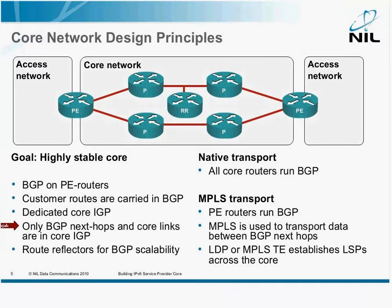Also, there's no reason to have customer prefixes in the core IGP. The only thing you should have there are BGP next hops and core links. And of course, if you have a decently sized network — more than a few routers — you should absolutely use route reflectors for BGP scalability.